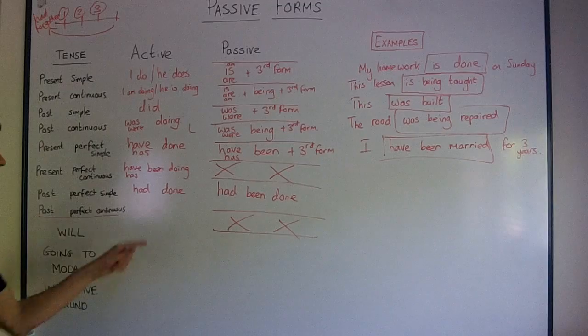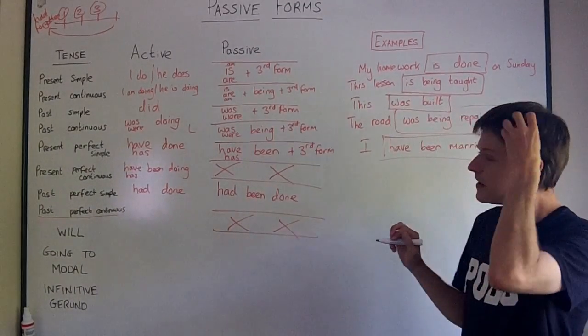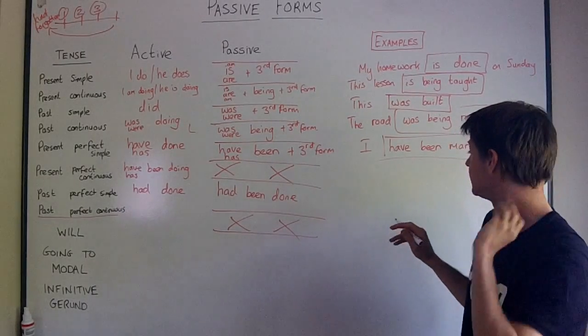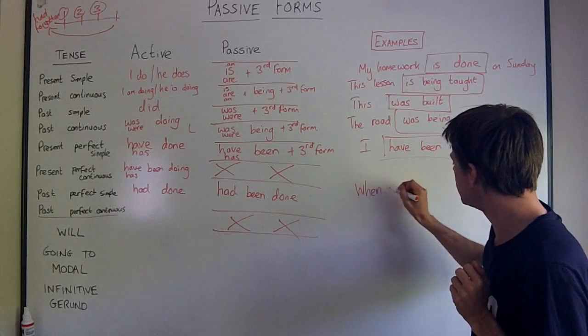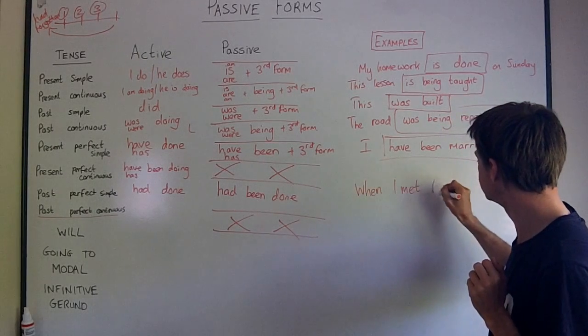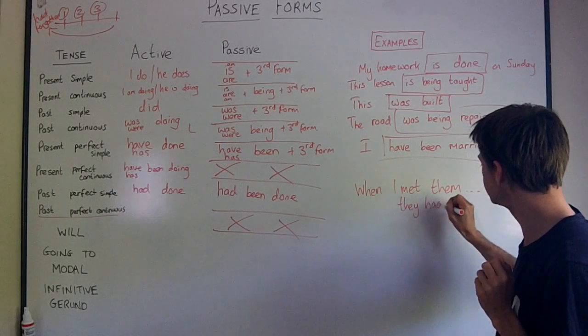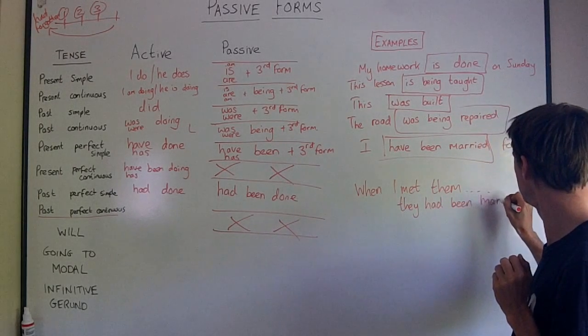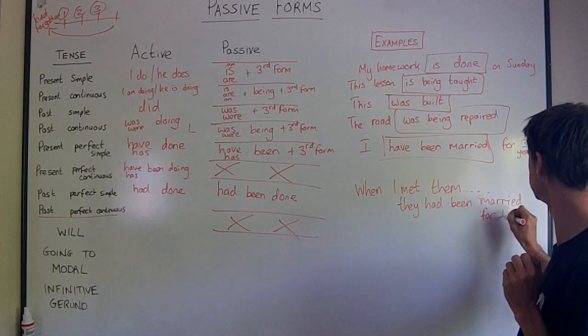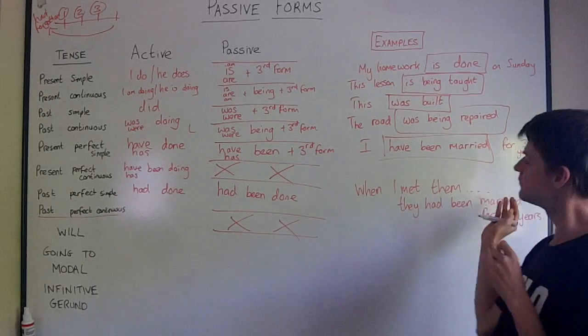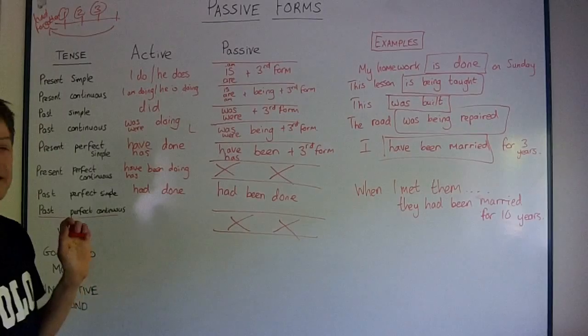So we go back in time before past simple. So if we have an example for passive, perhaps we'll use that have been married. When I met them, they had been married. They had been married for ten years. At that moment when I met them, the previous ten years, we go before that moment, the previous ten years, they had been married.